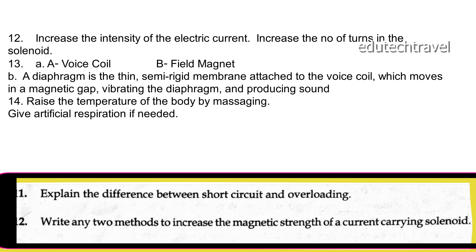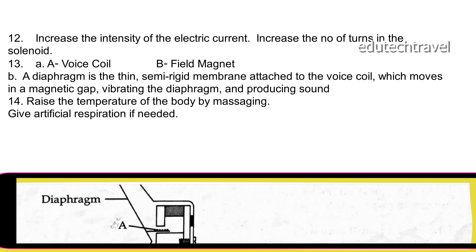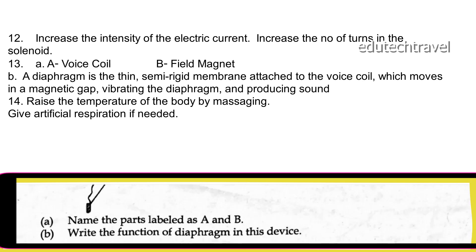Question 13: identify the figure of a moving coil loudspeaker. Part A is the voice coil and part B is the field magnet. The function of the diaphragm: a diaphragm is a thin semi-rigid membrane attached to a voice coil which moves in a magnetic gap, vibrating the diaphragm and producing sound.